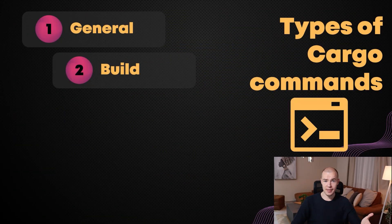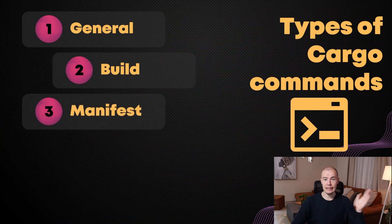The next set of commands are manifest commands. These ones are basically wrapped around our dependencies inside of our project and, because of that, they're also very tightly coupled with cargo.toml and cargo.lock files. You still do not know what those files are and what they're used for, but do not worry because we're going to cover them in-depth in our next video.